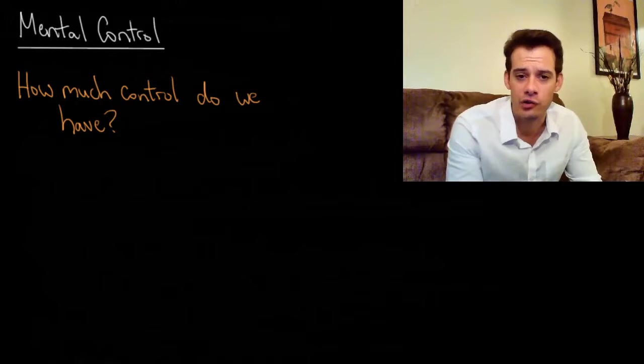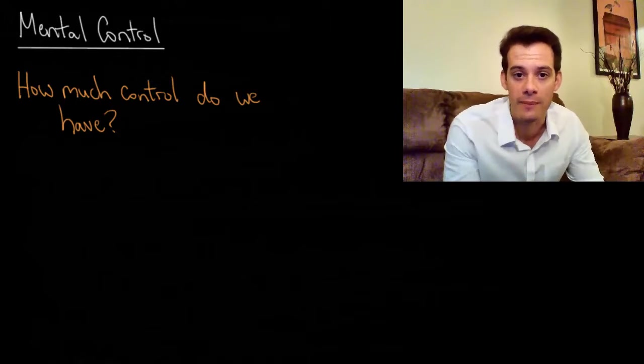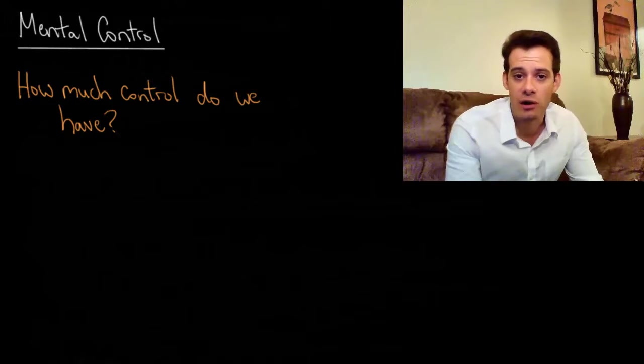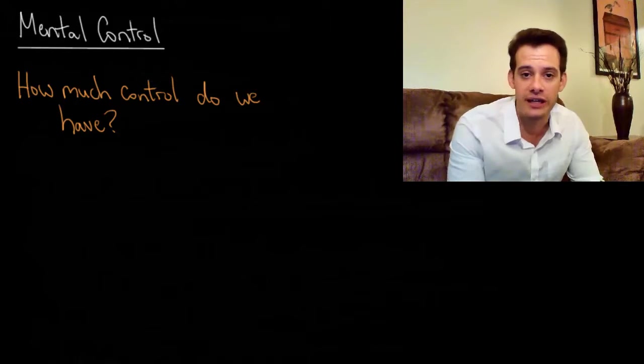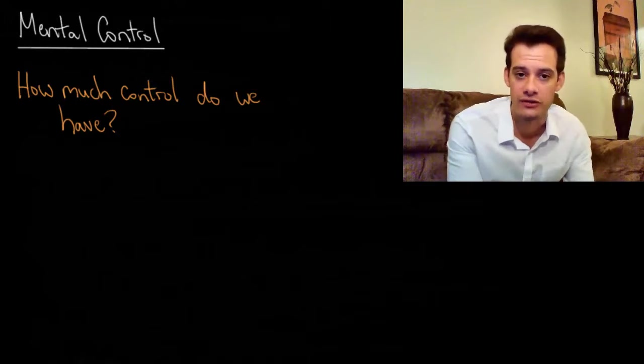Now another way we can see a lack of control is when it comes to trying not to think of certain things. So if I ask you not to think of a white bear, of course you end up thinking of a white bear. And this effect is even stronger if you really try not to think of a white bear. So this brings us to a study by the late Daniel Wegner, who I had the good fortune of taking a seminar with when I was in college.